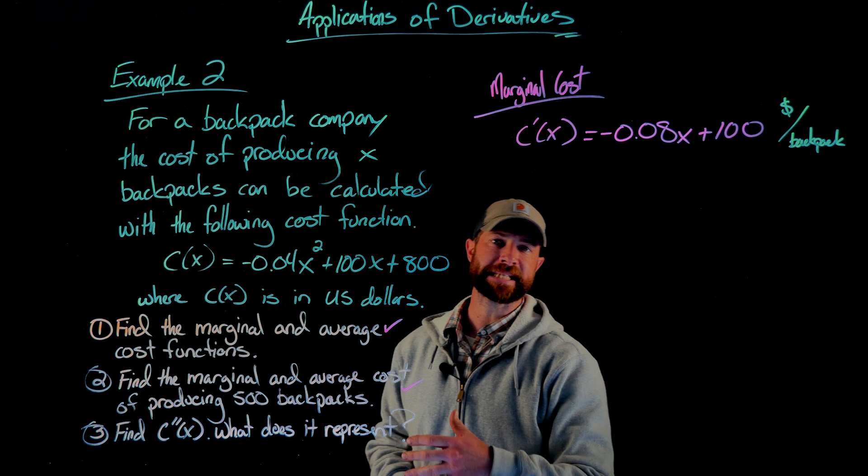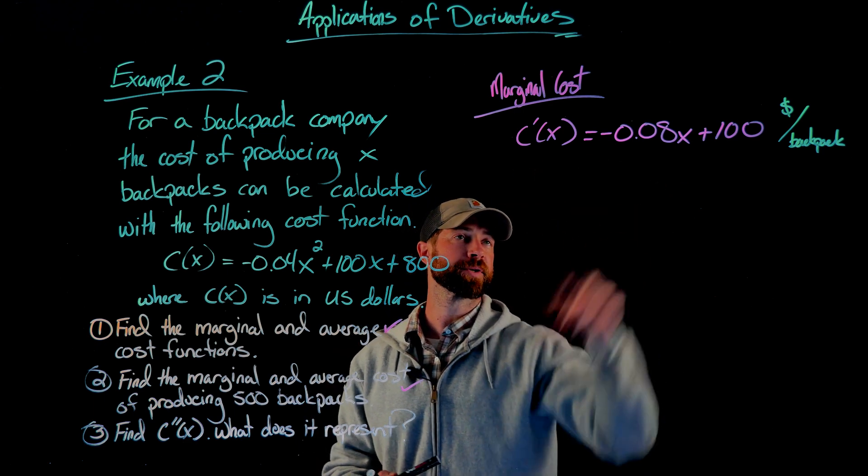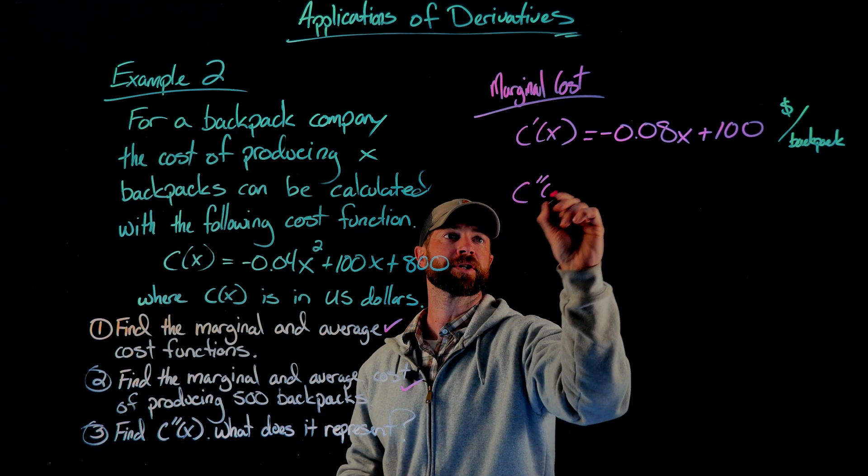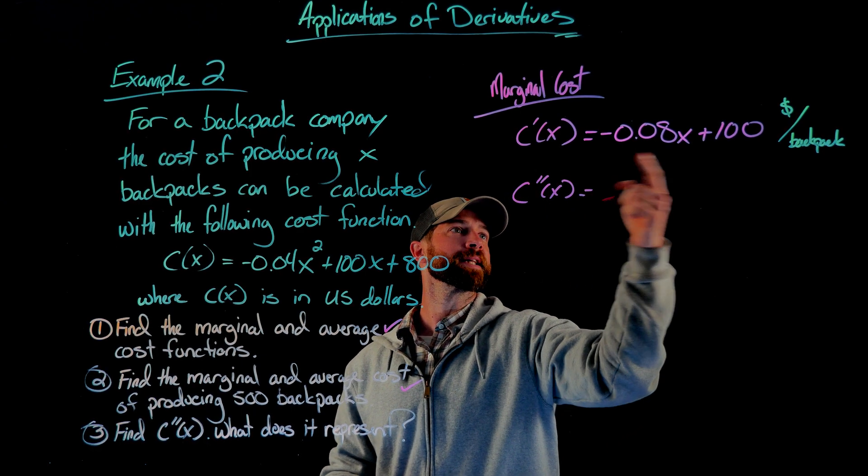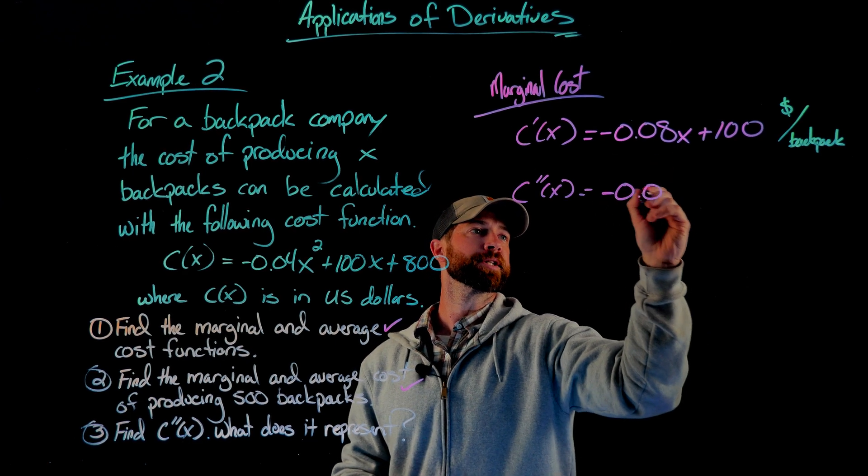Finally, let's calculate the second derivative and try to describe what this means. In this case, we have the first derivative right here. If we take the second derivative of the cost function, we would just get, this is the only thing that produces anything, and we'll get -0.08.